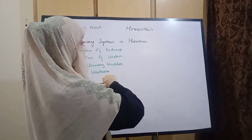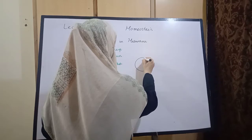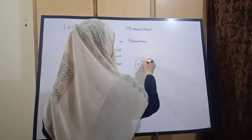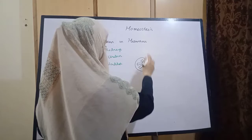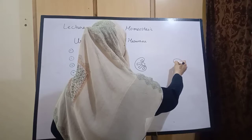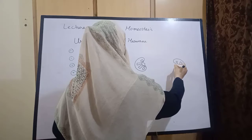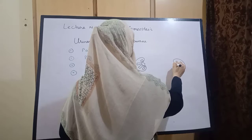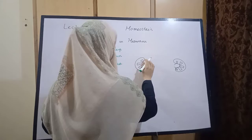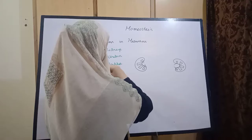इनको हम diagrammatically اور اچی طرح understand कर سکते ہیں۔ I am going to draw kidneys — pair of kidneys جو bean shaped ہوتی ہیں۔ Renal pyramids ہوتے ہیں اس میں اور ایک depression نظر آتا ہے hilum، اور اس سے اندر ایک حصہ ہوتا ہے جسے ہم pelvis کہتے ہیں۔ بالکل اسی طرح دوسری kidney بھی bean shaped ہوتی ہے، renal pyramids نظر آتے ہیں، اور hilum اور اس کا central حصہ pelvis۔ Pelvis کے end سے ہمارے پاس دو tubes نکلتی ہیں۔